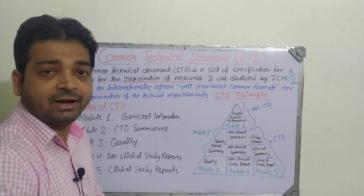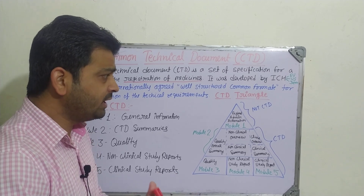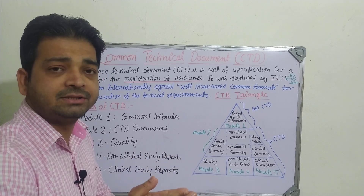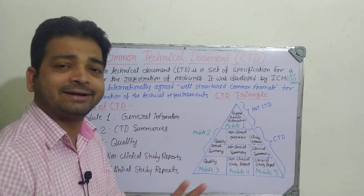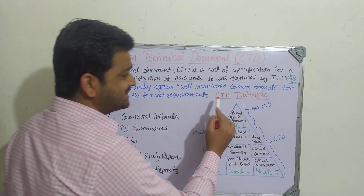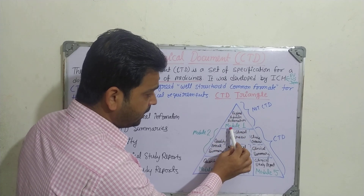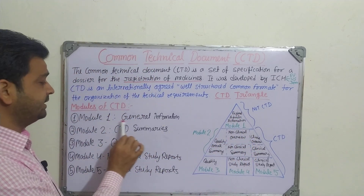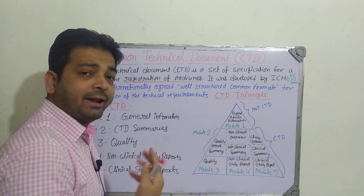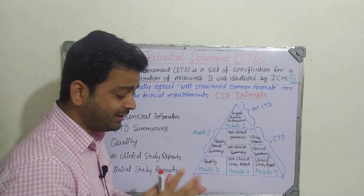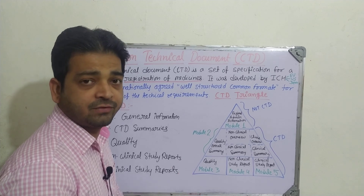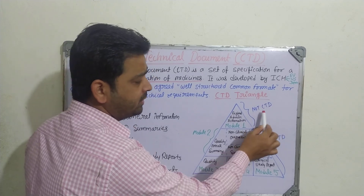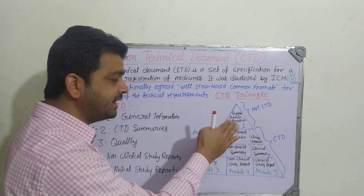The CTD triangle model is well known and important to understand. Whenever a pharmaceutical company files for the registration of a particular medicine — for export or marketing reasons — the CTD triangle applies. Module 1 is the Regional Administrative Information, covering general information such as who the manufacturer is, the company name, when it was established, the license number, and what manufacturing activities they perform. However, Module 1 is not technically part of the CTD itself, though it is always included.